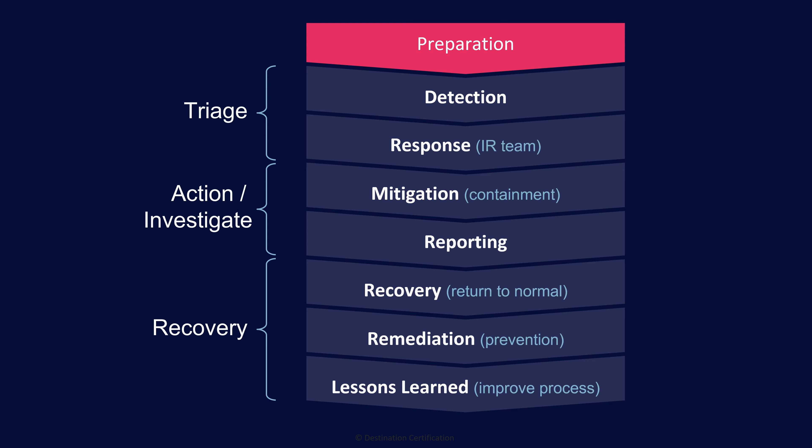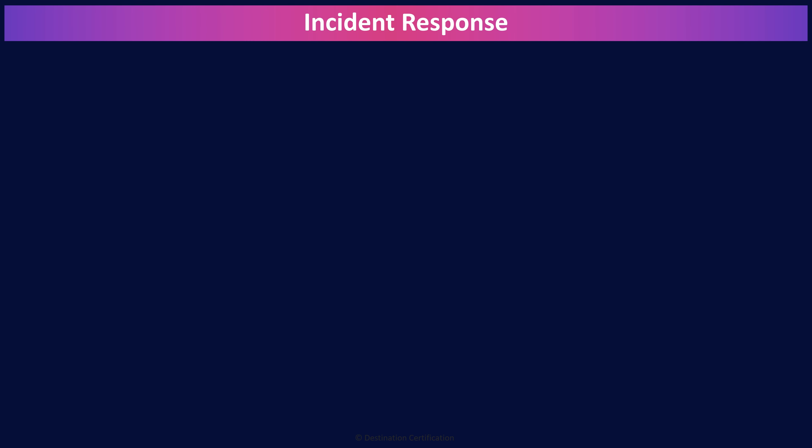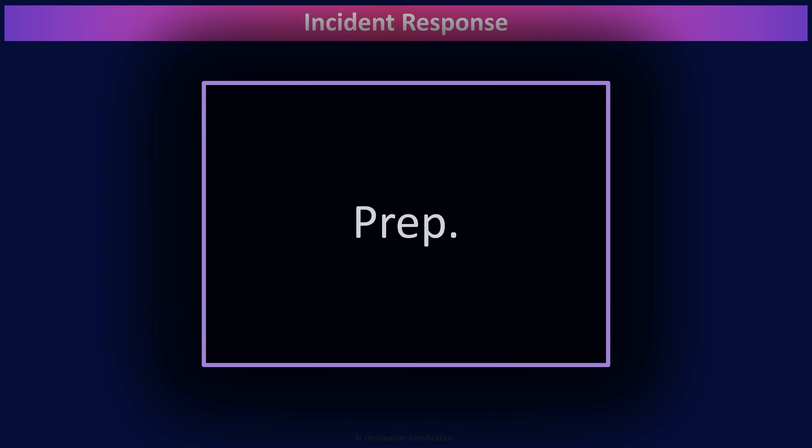These different incident response process frameworks define slightly different numbers of steps or names of steps. I wouldn't overly focus on the exact steps and names. All of these incident response processes have the same underlying goals: be prepared for an incident, be able to detect an incident and then respond quickly, minimize the damage, return to normal operations, and learn from the incident so you can improve things and try to prevent future incidents.